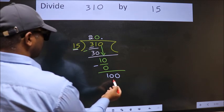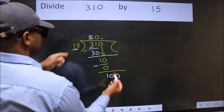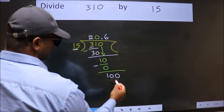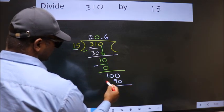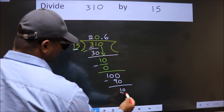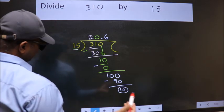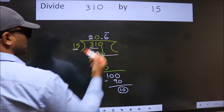A number close to 100 in 15 table is 15, 6, 90. Now we subtract. We got 10 again. That means we get bar on this number.